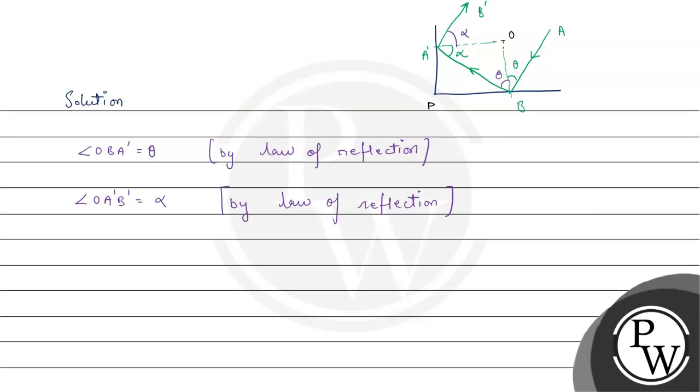Now, for A B and A dash B dash to be parallel, this angle, let us suppose is theta dash. For these two rays to be parallel, this angle must be equal to this angle as they are both angles from horizontal.